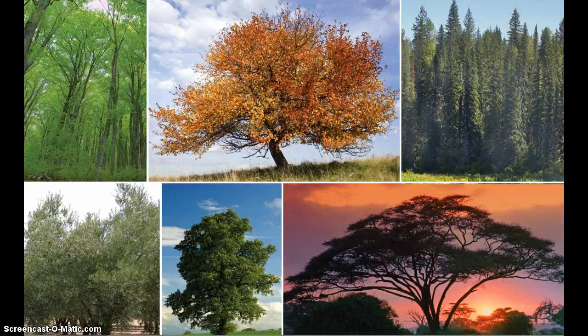A plant's life cycle begins with a seed. A plant goes through the life cycle of a seed, a sprout, a seedling, an adult flower, and seed dispersal.